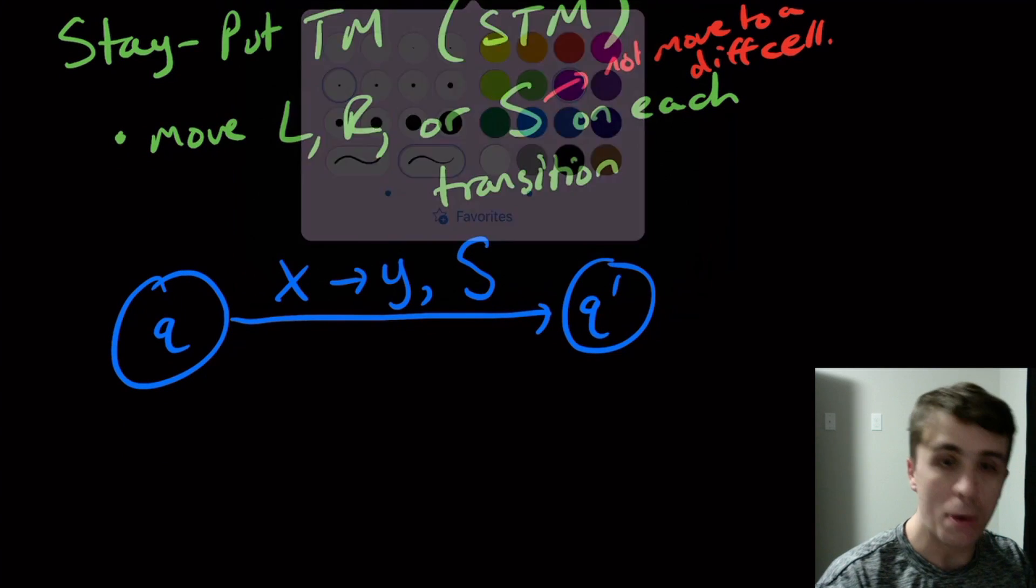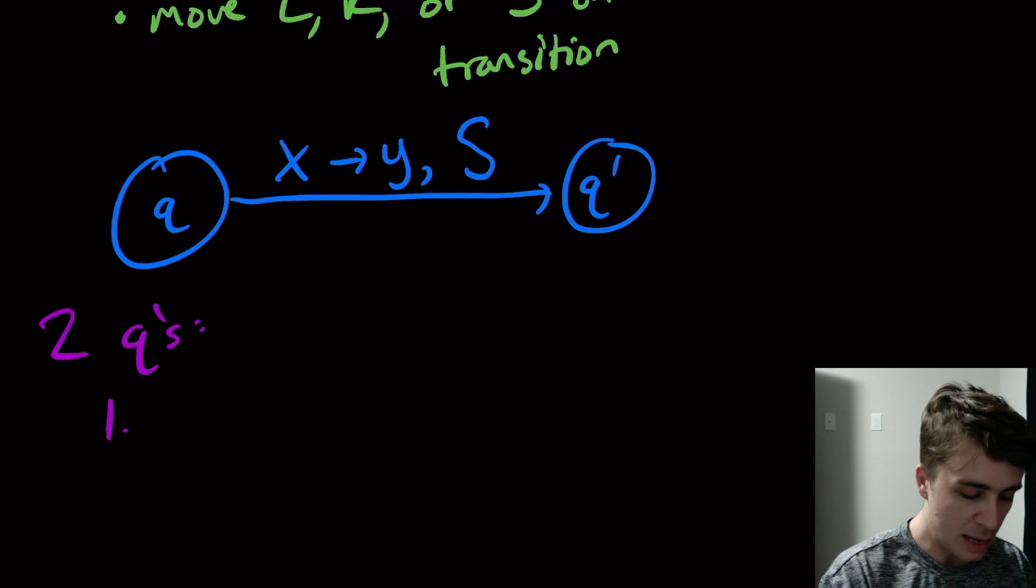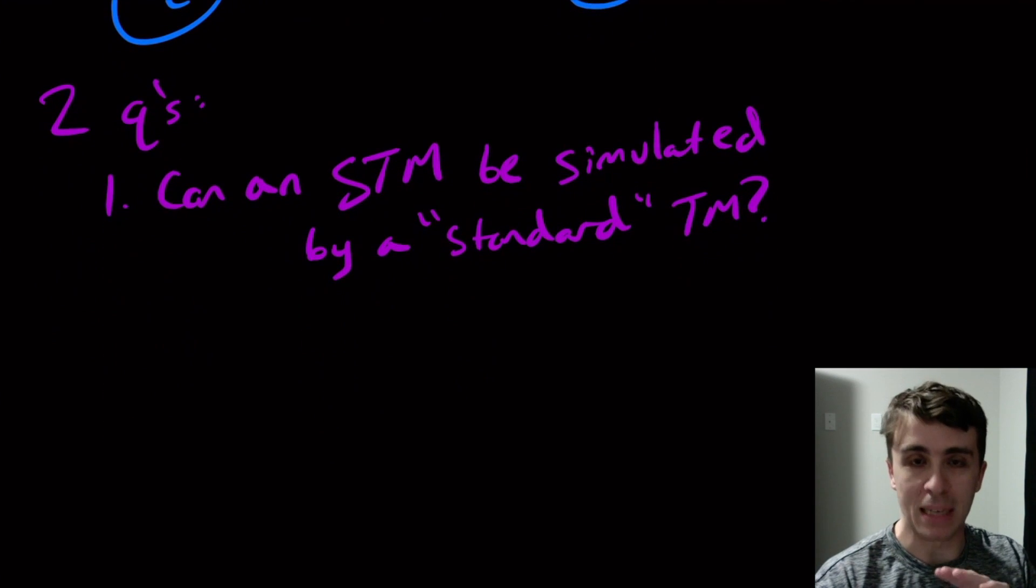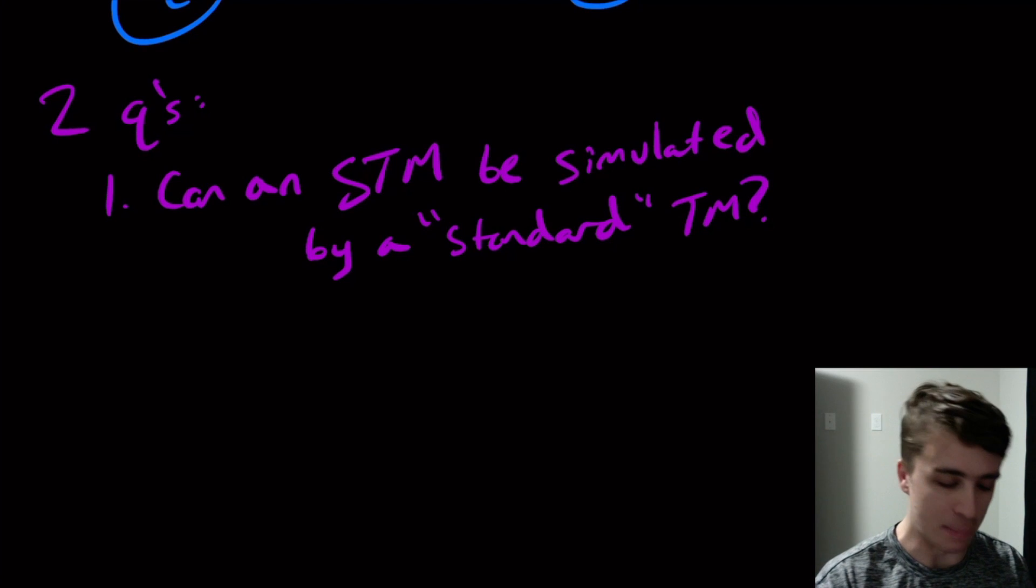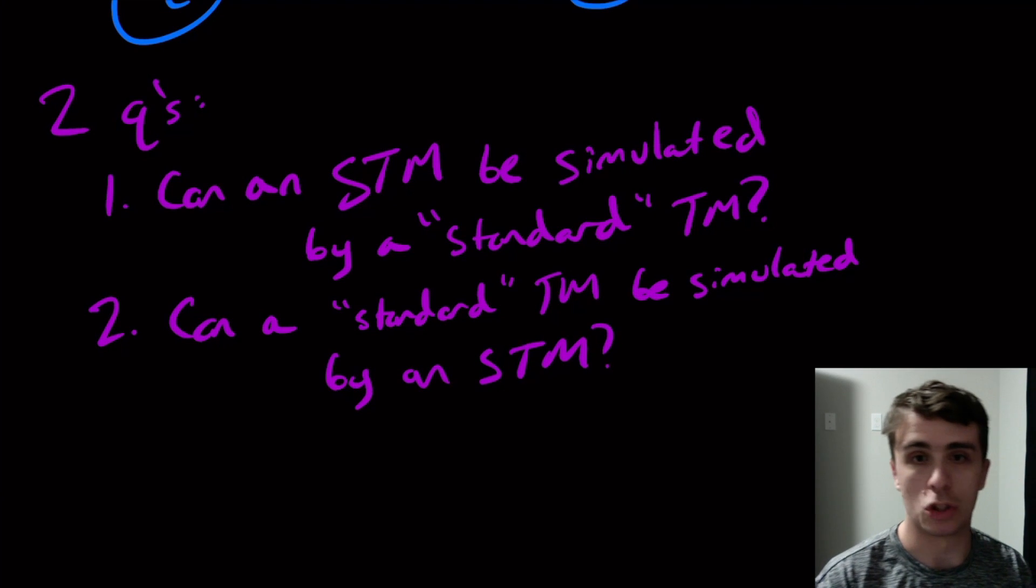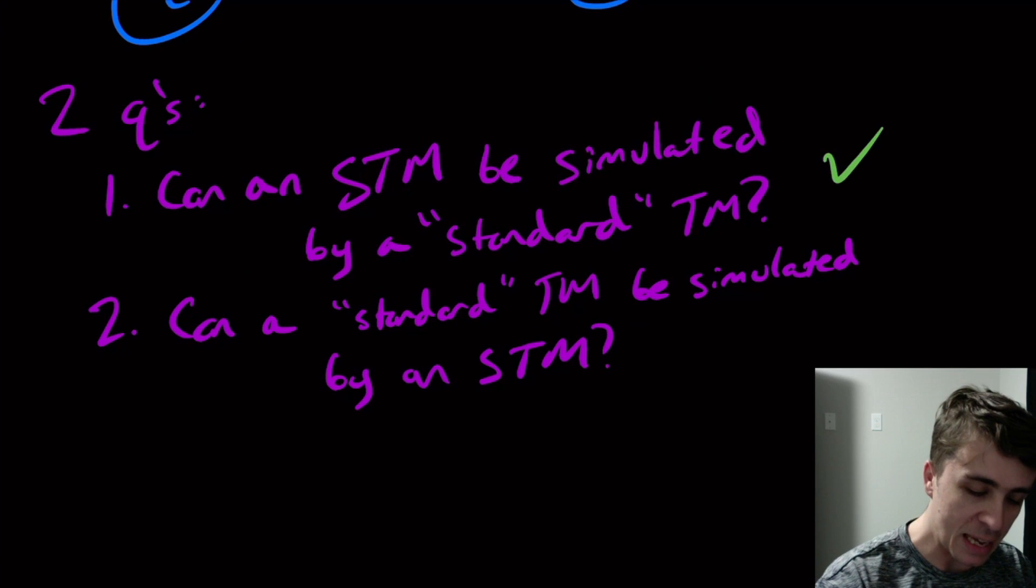So in order to show equivalence to the standard model or not, we would have to answer the question, actually two questions, which are: can an STM be simulated by a standard Turing machine, standard model Turing machine. So by standard I mean the one with just left and right, not with the stay put thing. And the second question is the other one. Can a standard Turing machine be simulated by an STM, by a stay put Turing machine? So it's kind of like the DFA-NFA equivalence thing. So what we'll be able to show is that the answer to both is yes.